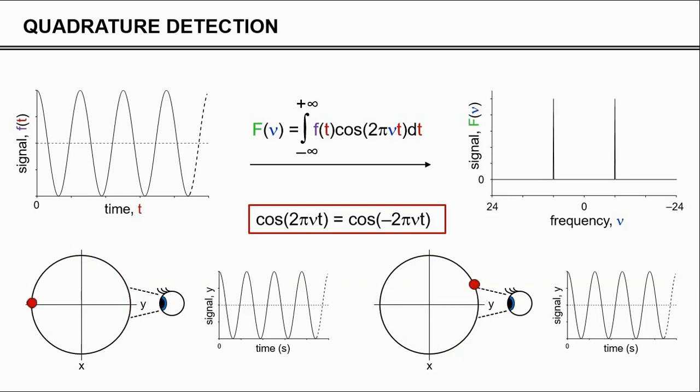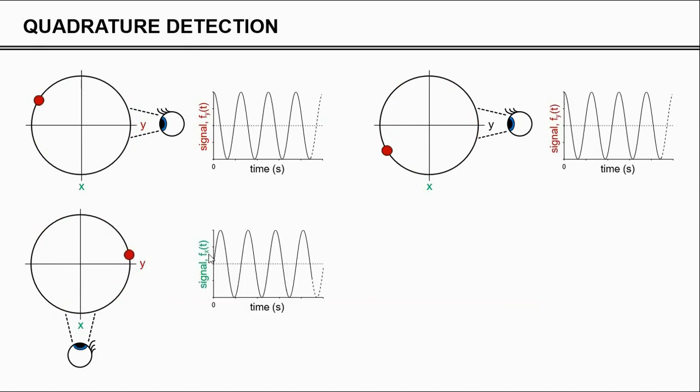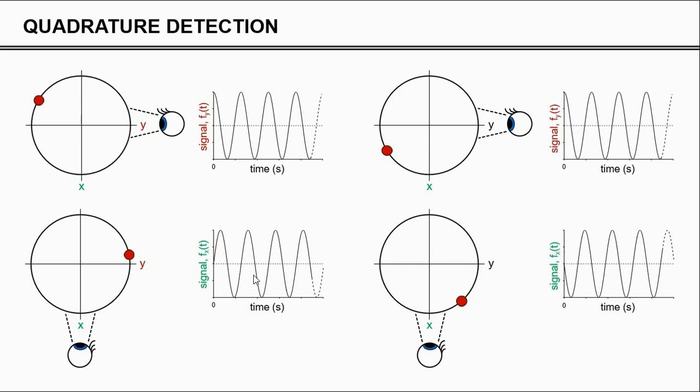This can be done by observing the signal also along a second orthogonal axis. That is referred to as quadrature detection. The way that works, we already know this. But what now if you start looking along the x-axis? The ball starts at zero, then it goes to plus x, zero, minus x. If the ball now rotates the other way around, it goes zero, minus x, zero, plus x. In other words, the curve is exactly inverted.